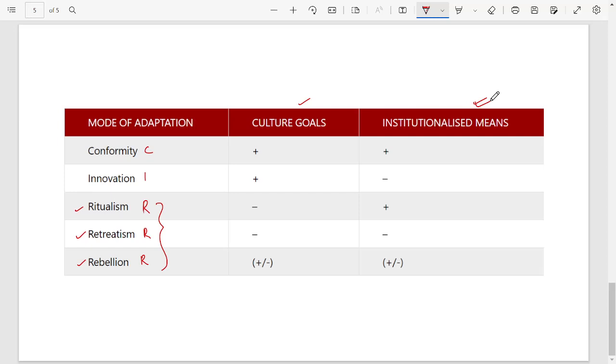Let us remember how these five modes of adaptation are different from each other. The first mode of adaptation is conformity, where there is no problem. Whatever your goal was, let's say you wanted to become a doctor, and accordingly you have also cracked the means. So there is no problem - both of them are plus. You wanted to become a doctor and you also succeeded in the means to become a doctor.